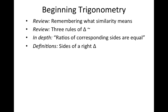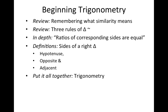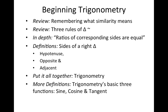Then we're going to move on to defining the different sides of a right angle — that'll be partially new at least. Those are the hypotenuse, the opposite, and the adjacent sides. Then we're going to put it all together, and that's going to give us trigonometry, with definitions of sine, cosine, and tangent.